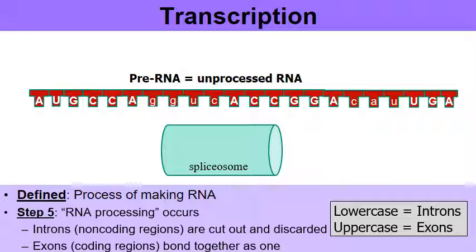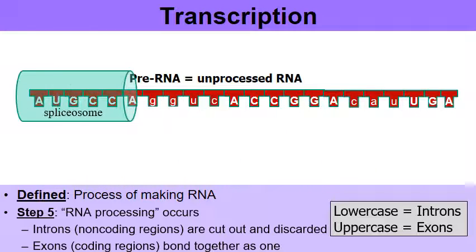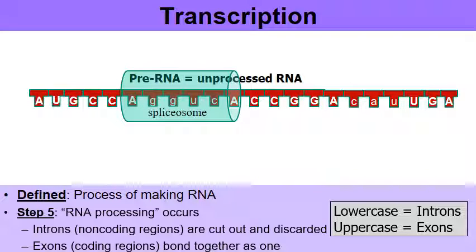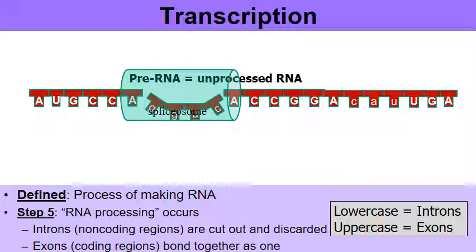There's a special protein complex enzyme combination called a spliceosome. And it takes the pre-RNA and starts reading until it finds an intron. And then it begins to cut out the intron and discard it.